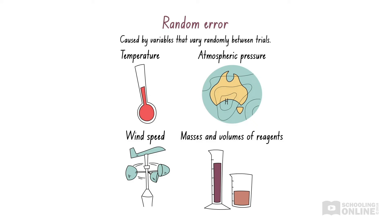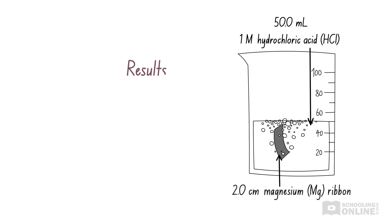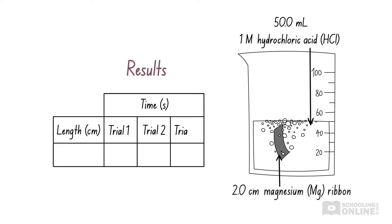Let's see how this applies to a chemical reaction. Suppose that we are trying to find the time taken for a 2 cm length of magnesium ribbon to react with 50 ml of 1 molar hydrochloric acid. We perform three trials and get slightly different results each time.